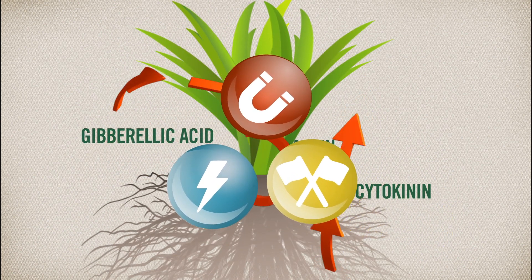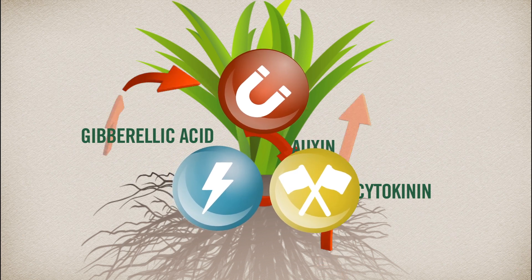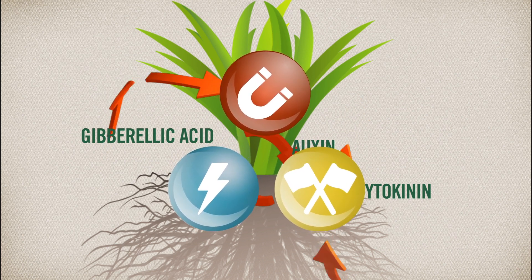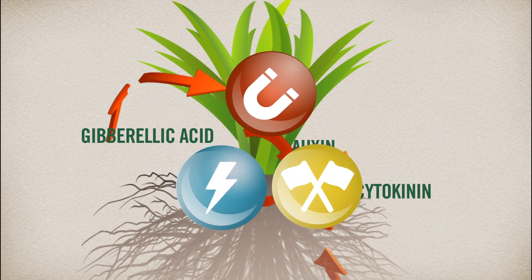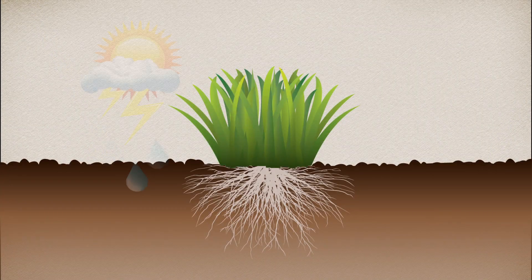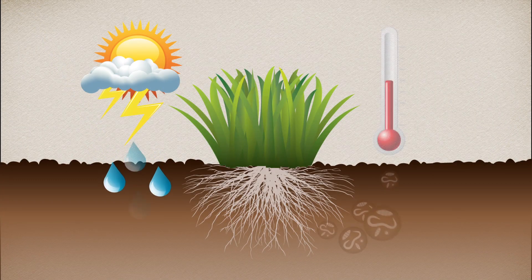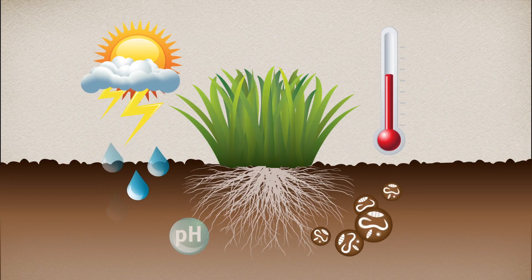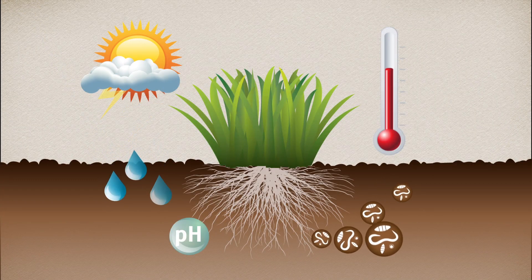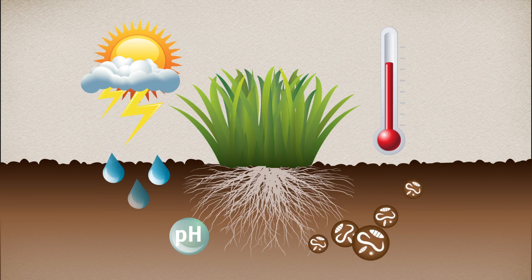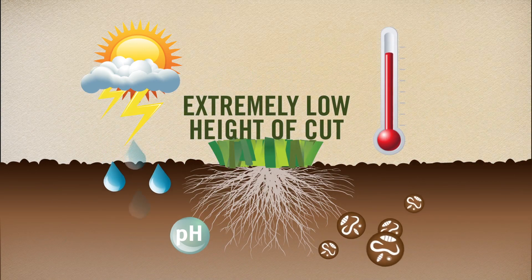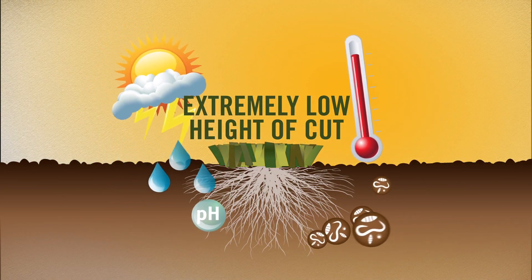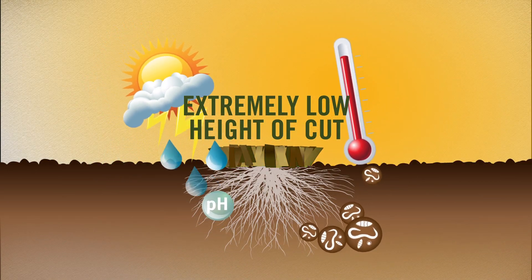Under ideal conditions, the turf plant can produce the correct quantities of gibberellic acid, auxin, and cytokinin to properly respond to environmental conditions. But as we know, golf courses can present far from ideal conditions. In addition to environmental stresses, a low height of cut disrupts the delicate balance of these three growth hormones.